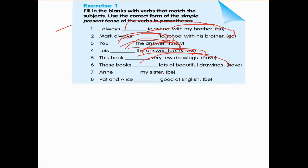Anna is my sister. Do you know what this B is? So we will use is. Anna is my sister. Pat and Alice are good at English.